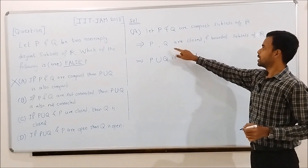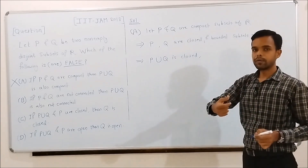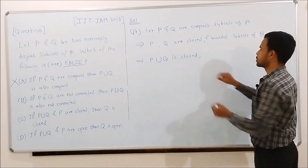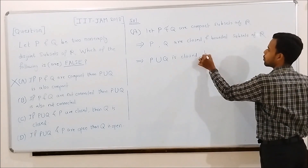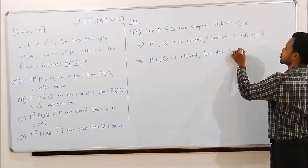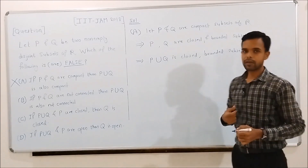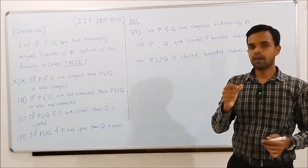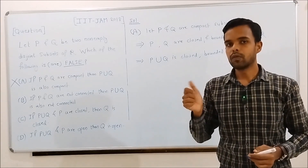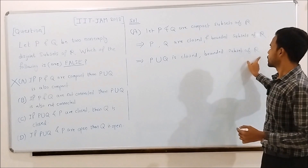Also, we know that a finite union of closed subsets of R is again a closed set, so P union Q is closed. Also, as P is bounded and Q is bounded, P union Q is also bounded. So P union Q is a closed and bounded subset of R.